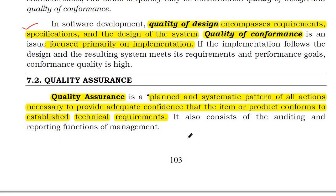What is quality assurance? Quality assurance is a planned and systematic pattern of all the actions necessary to provide adequate confidence that an item or product conforms to the established technical requirements.